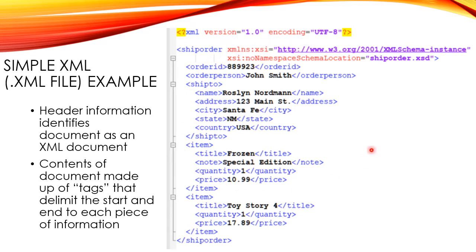The contents of the document, seen here, are made up of a series of tags that delimit the start and end of each piece of information. Each is identified by a tag text — in this case, 'order person' — and it ends with the same tag text with a slash in front of it. In this manner, the data is organized so that it is both human readable and can also be processed by systems. The information contains everything required to specify what's needed as part of the file.